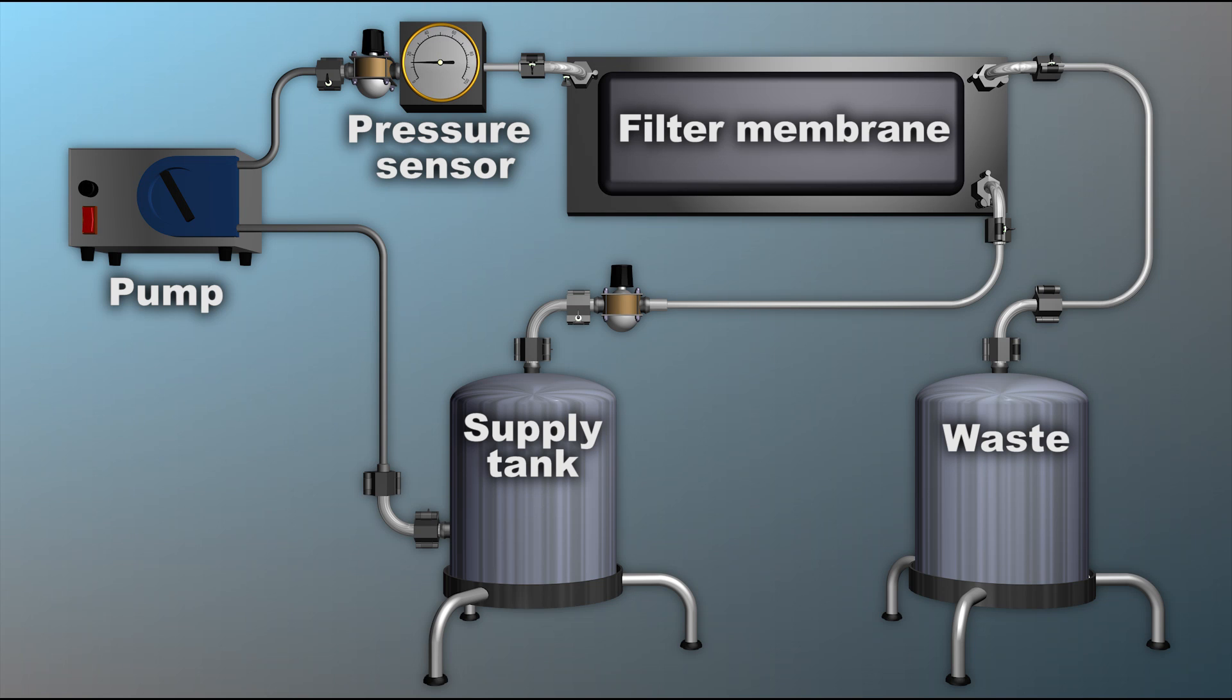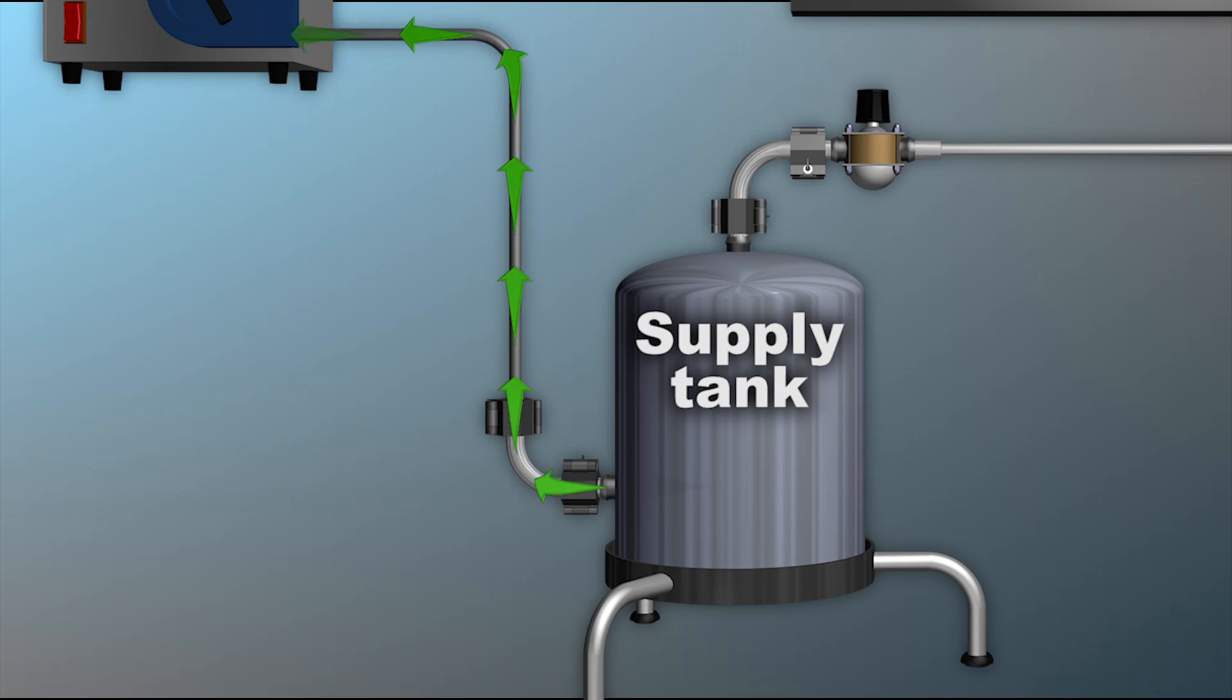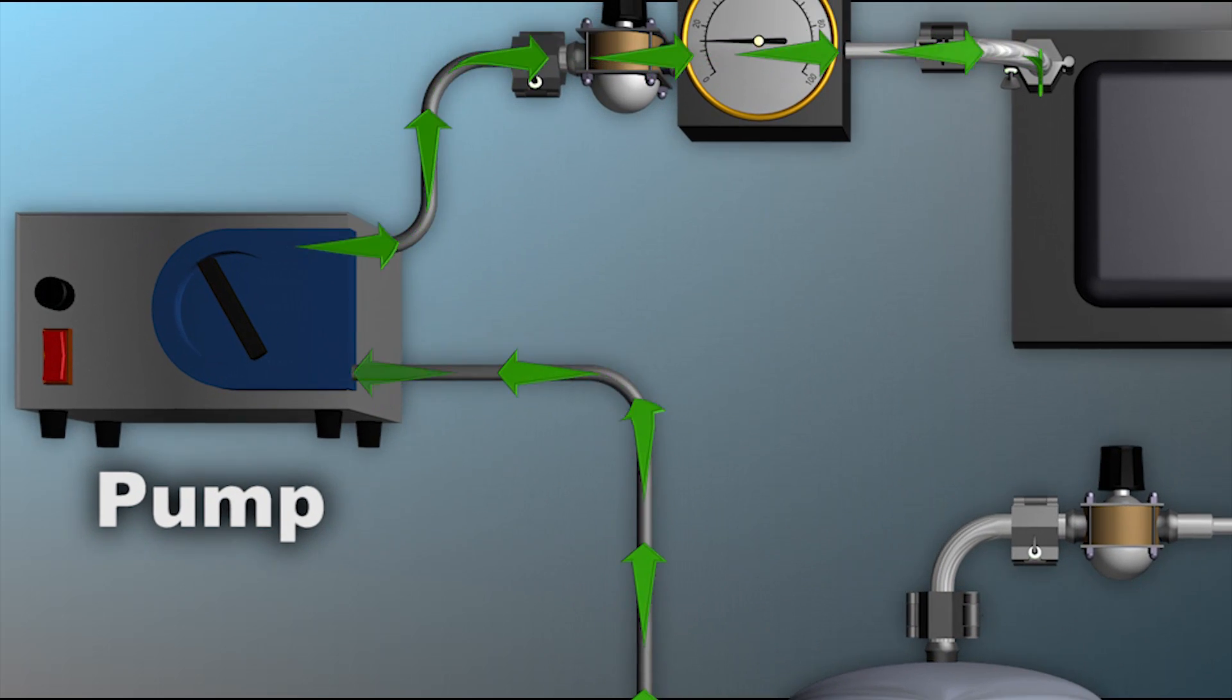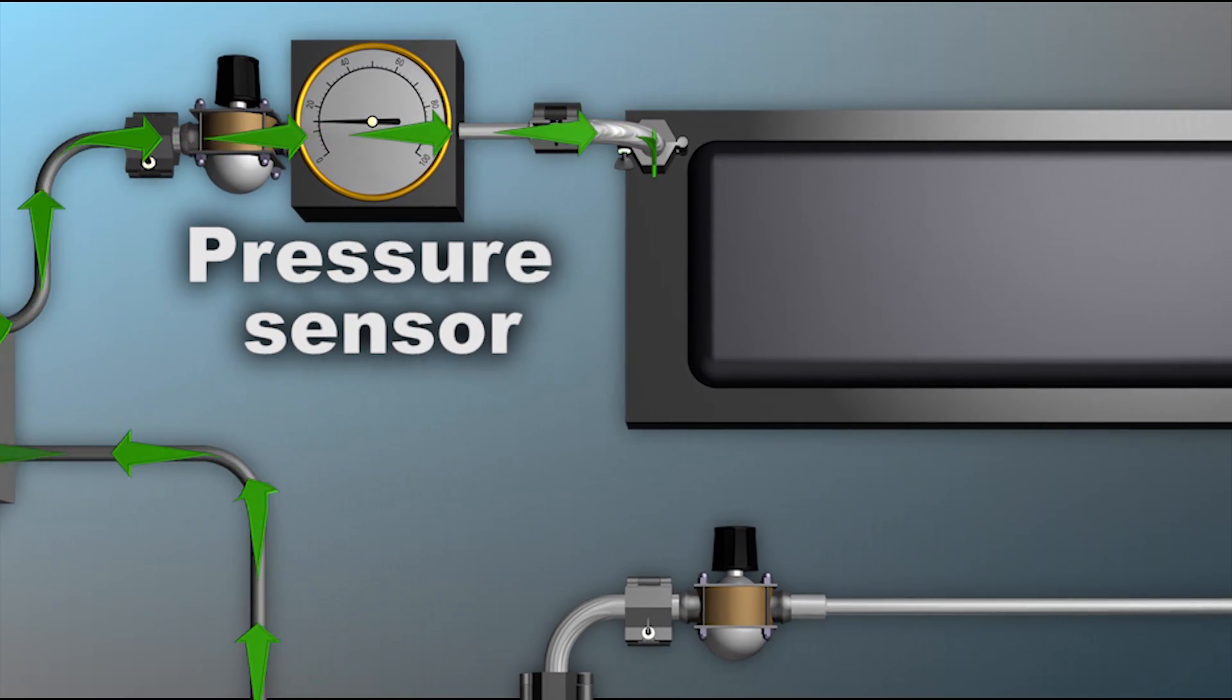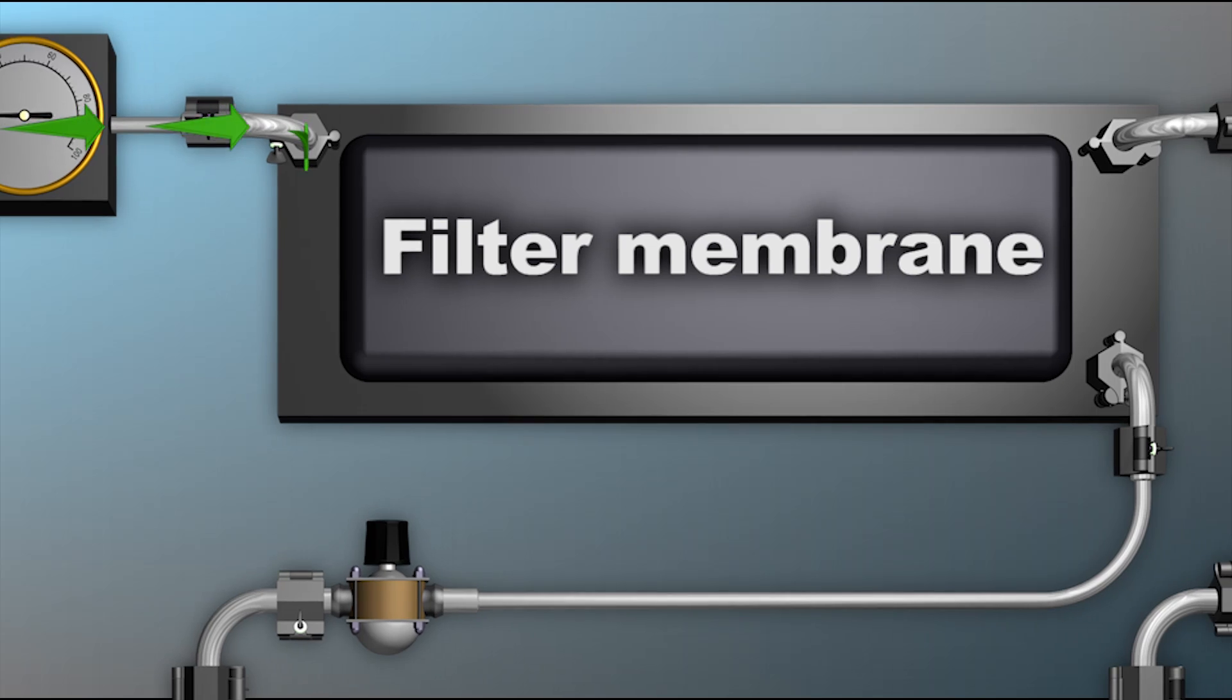As the solution moves through the TFF apparatus, it leaves the supply tank, is pulled through a pump, past a pressure sensor, and then across the filter membrane.